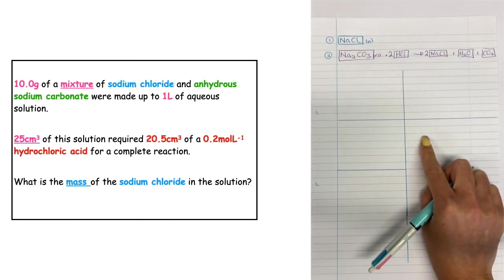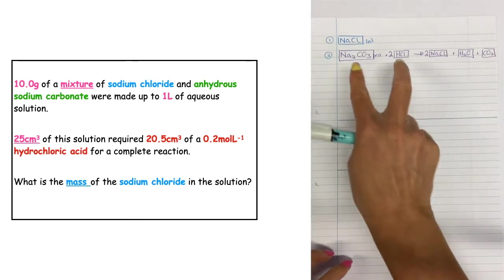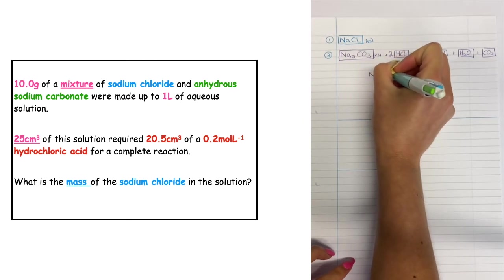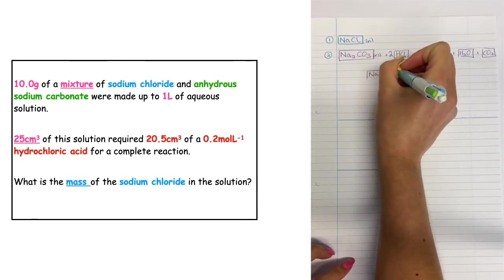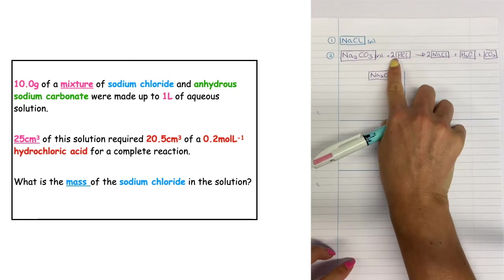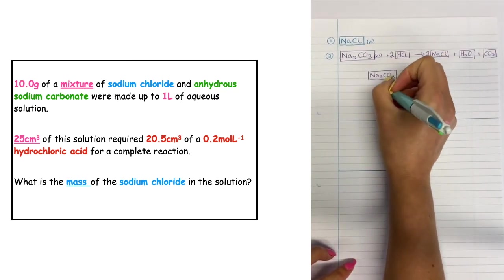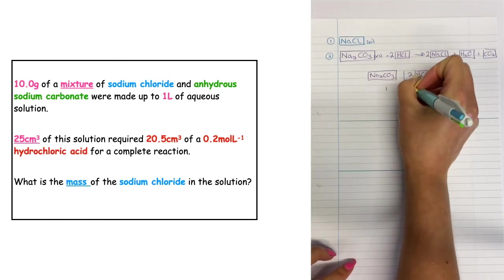When we're doing a titration we take down our two reactants. So here I've got my Na2CO3 and I'm going to keep that in a box, and it's reacting with 2 HCl. I want to do my mole ratio which is one to two.